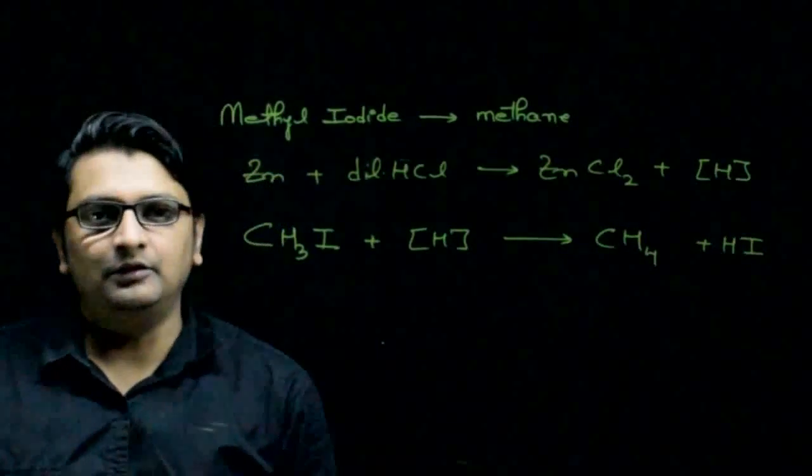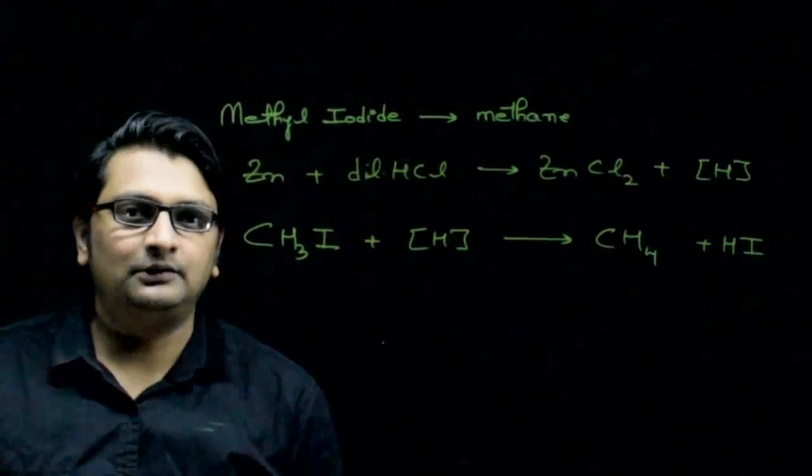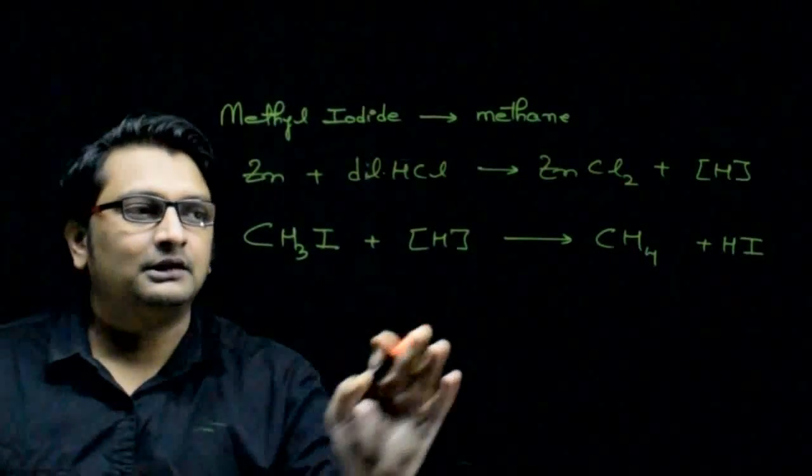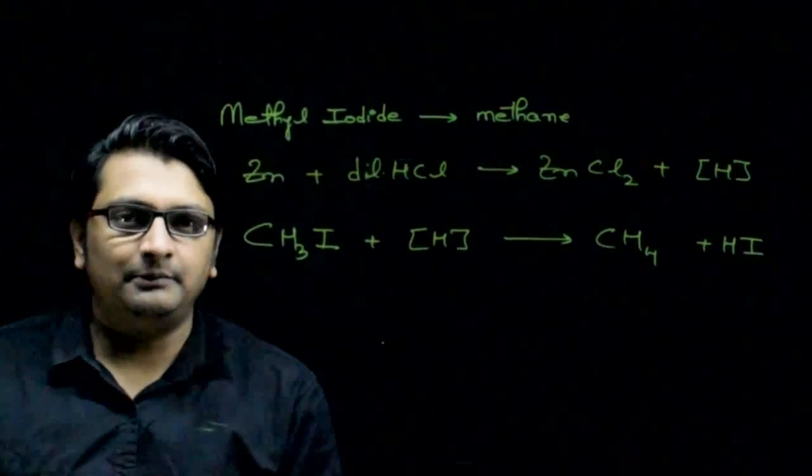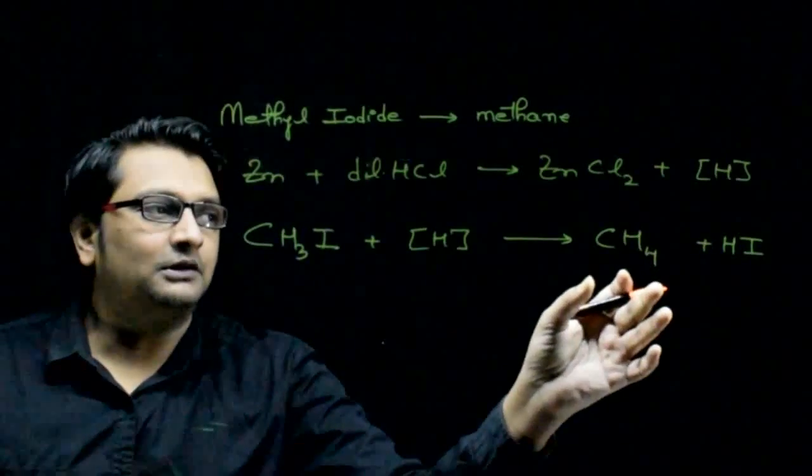So this is how methyl iodide, with the help of nascent hydrogen atom, can be converted to methane.